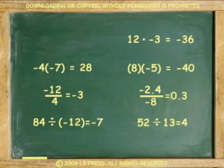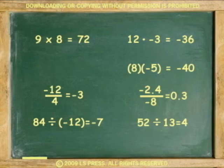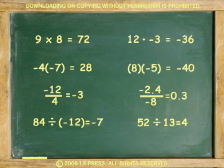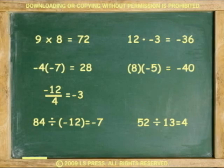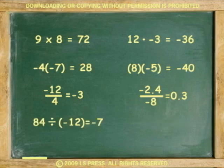9 times 8 equals 72 — same sign, positive. 12 dot negative 3 equals negative 36 — different signs, negative. Negative 4 times negative 7 equals positive 28 — same signs, positive. 8 times negative 5 equals negative 40 — different signs, negative. Negative 12 divided by 4 equals negative 3 — different signs, negative. Negative 2.4 divided by negative 8 equals 0.3 — same signs, positive. 84 divided by negative 12 equals negative 7 — different signs, negative. 52 divided by 13 equals 4 — same signs, positive.